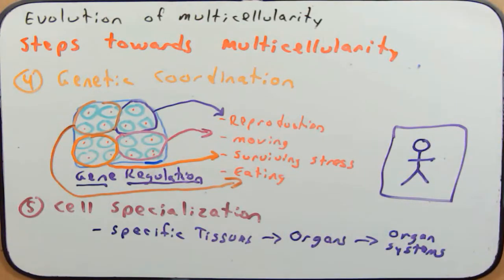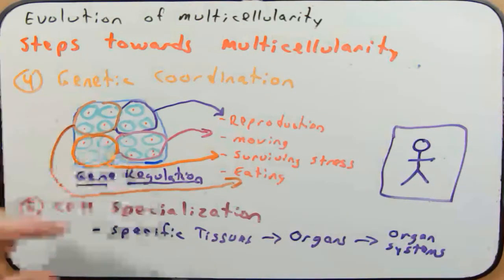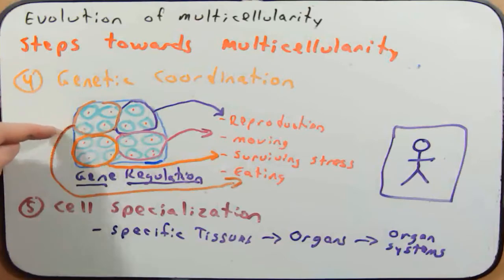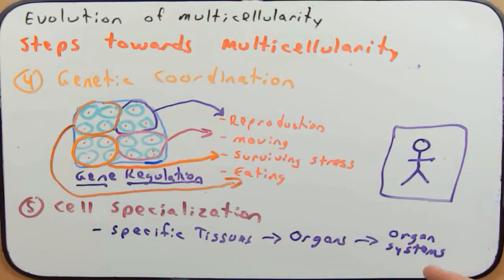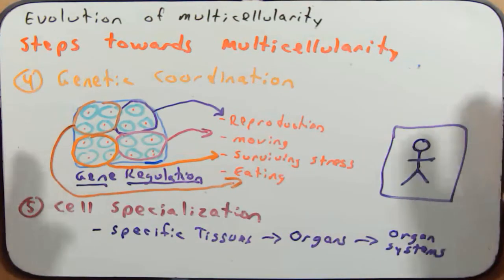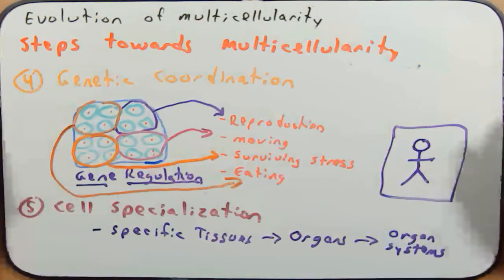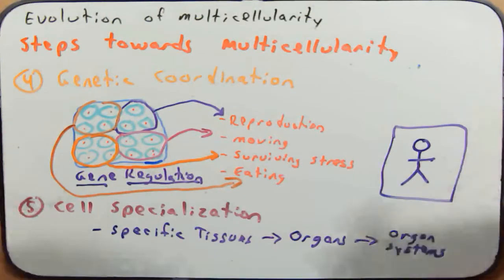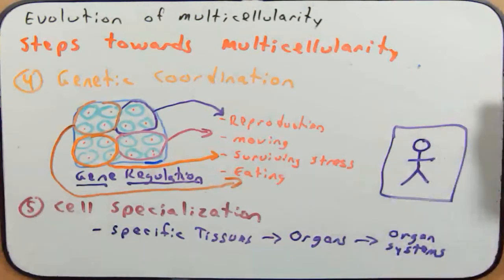As cells specialize, they don't all look the same — they take on different shapes, forms, and overall structures. That is all I want to cover regarding the evolution of multicellular organisms. Let's move on to our next learning objective.